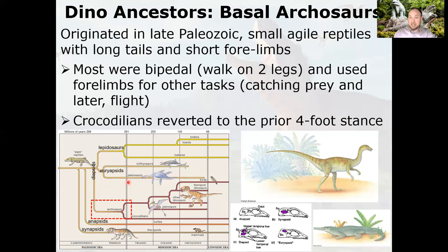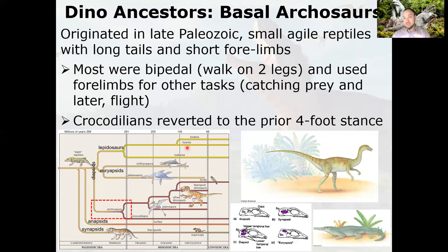Pterosaurs are archosaurs — crocodilians branch off here, pterosaurs branch off here, and it's not until further along that we get to the dinosaurs. Pterosaurs are more closely related to dinosaurs than some others, but they're not themselves dinosaurs — they're flying reptiles on a different evolutionary path. Birds, however, are on the dinosaur branch. Snakes and lizards are not dinosaurs — they loosely resemble dinosaurs in some ways, but that's convergent evolution. Dimetrodon kind of looks like a dinosaur too, but it's warm-blooded, may have had fur, very close to a mammal — it's the forebearer of mammals, not a dinosaur.